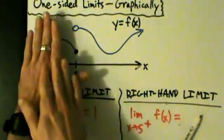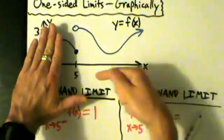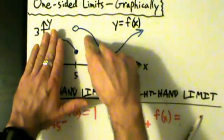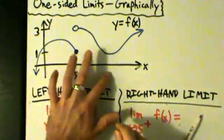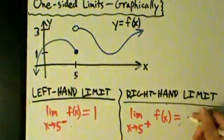Now we cover up what's happening on the left, because we don't care about it at all. And now we're just going to come into x equals 5 from the right. So as we do that, we're following along this curve here. Where are the y values going? It looks like they're going to hit 3. As x comes into 5 from the right, the y values are getting closer and closer to 3. So this limit then is 3.